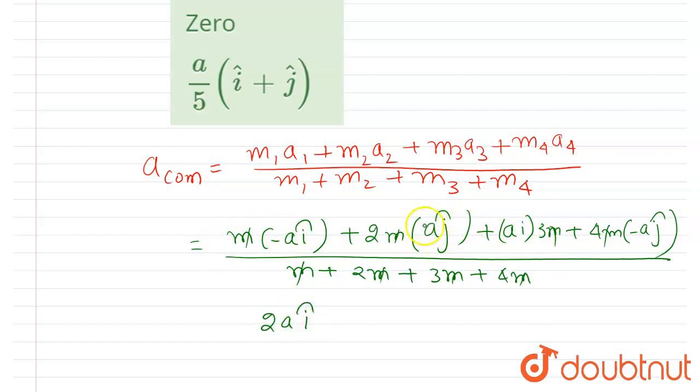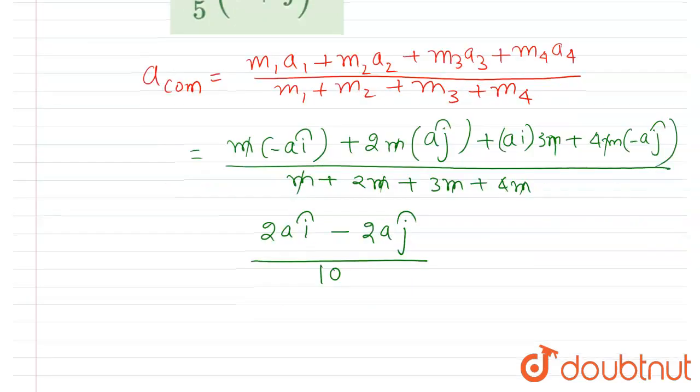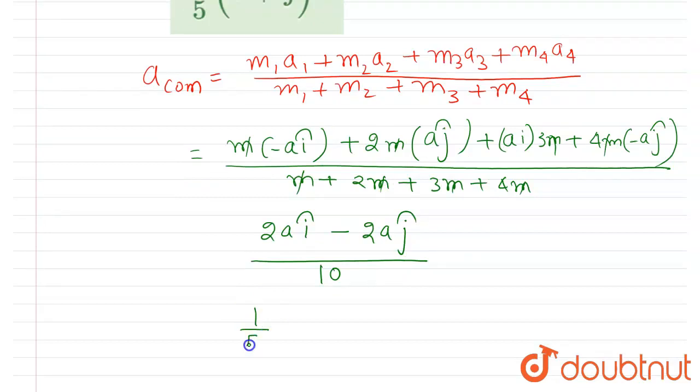Now let's talk about the ĵ component. This is 2ĵ and this is -4ĵ, so it will be -2a ĵ. In division you can see 1 plus 2 is 3, plus 3 is 6, plus 4 is 10.